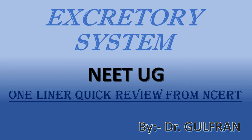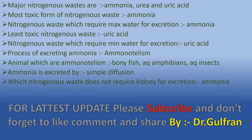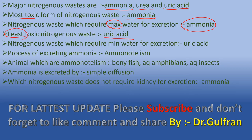Everyone, today we are going to start a quick review about the excretory system. The major nitrogenous wastes are ammonia, urea, and uric acid. The most toxic form of nitrogenous waste is ammonia, and the nitrogenous waste which requires the maximum amount of water is also ammonia. The least toxic nitrogenous waste is uric acid.